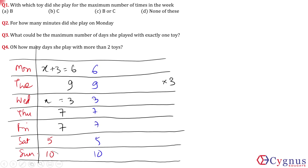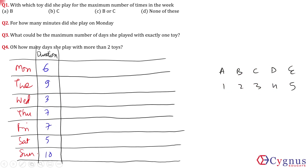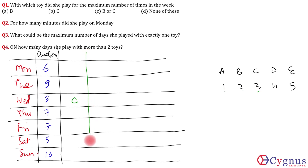So the time on each day is confirmed: Monday=6, Tuesday=9, Wednesday=3, Thursday=7, Friday=7, Saturday=5, Sunday=10. Now each toy has a fixed duration — A=1, B=2, C=3, D=4, E=5 minutes. Starting with Wednesday (3 minutes), the possibilities are: she plays only with toy C (which is 3 minutes), or she plays with toys A and B combined (1+2=3).